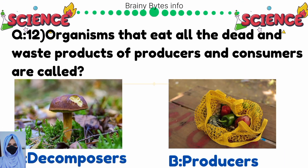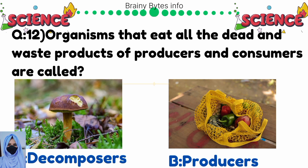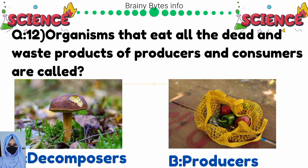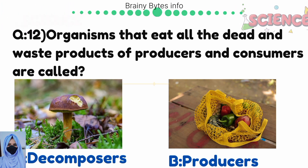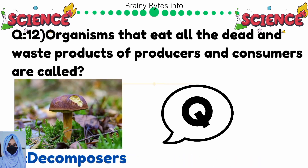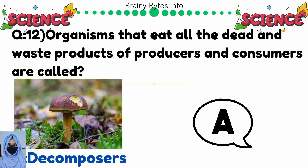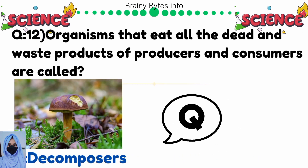Organisms that eat all dead and waste products of producers and consumers are called — option A: decomposers, option B: producers. Correct answer is decomposers.